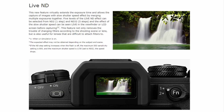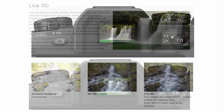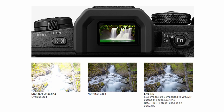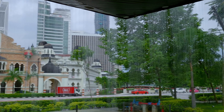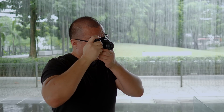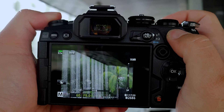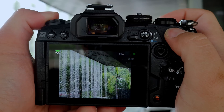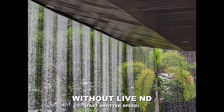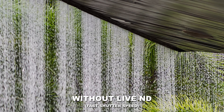How does Live ND prevent overexposure and at the same time allow the use of slow shutter speed to capture motion? It takes multiple images at much shorter durations consecutively with no break in between, and merges them through computational processing to simulate the motion blur equivalent to a slow shutter speed. Typically when shooting in bright sunlight with fast shutter speeds, flowing water appears pretty much frozen.